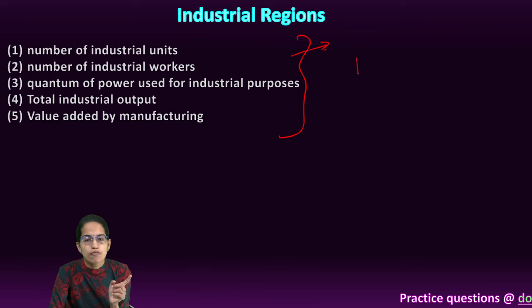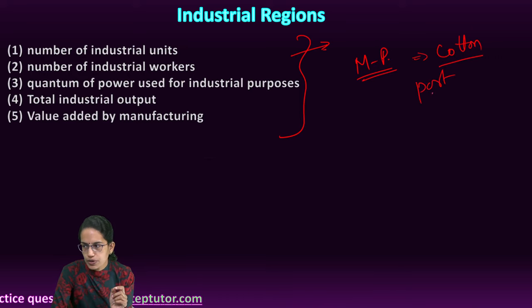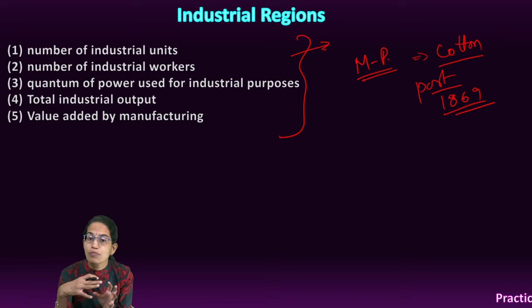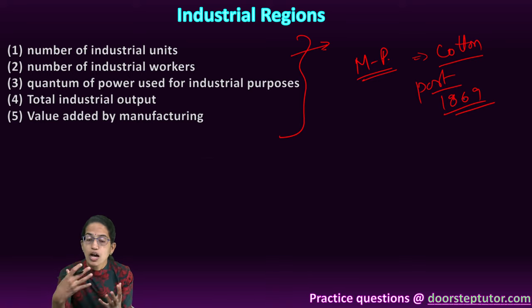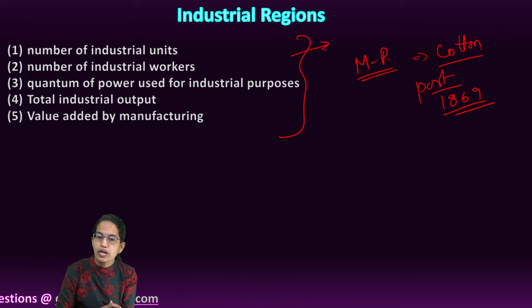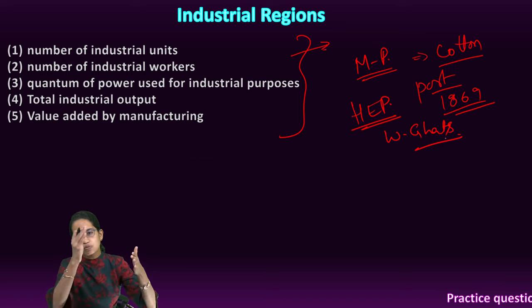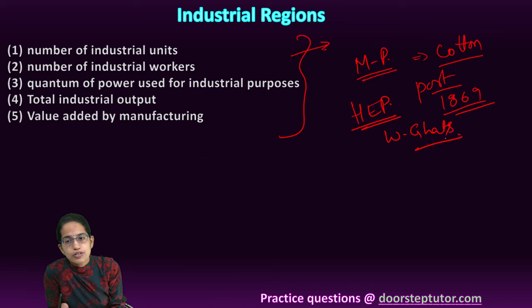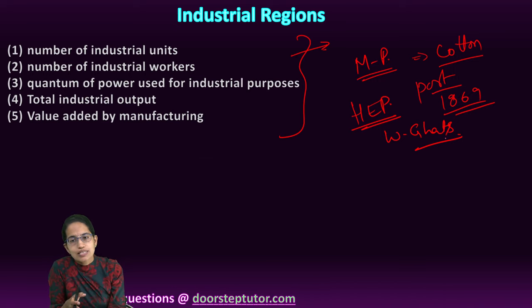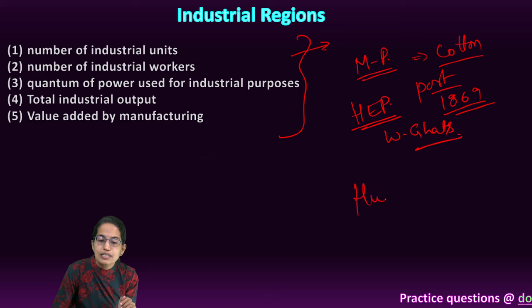The first industrial cluster is the Mumbai-Pune region, originally built around cotton textile. Mumbai is a port area, and the opening of the Suez Canal in 1869 brought significant trade impact, boosting imports and exports through the port. This region also had significant hydroelectric power generated from the Western Ghats, with numerous rivers and tributaries powering projects. Besides cotton textile, this region is also known for chemical industries, petrochemical industries, leather, synthetic, and plastic goods industries, electrical and shipbuilding industries.